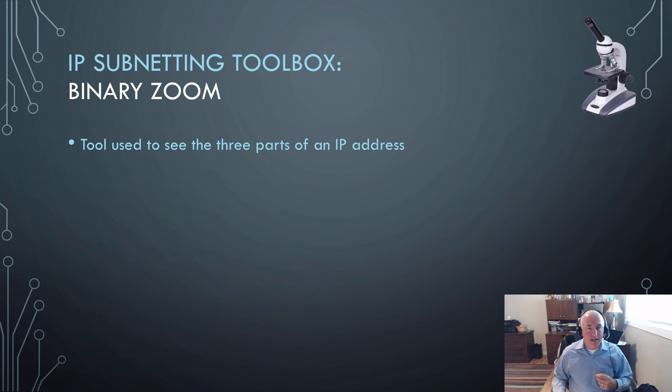This is a tool that lets us look at an IP address in binary. And that allows us to see the three parts of an IP address. I know you thought there were four, because there's four octets. We only see that in decimal. In the binary world, there are three parts, the network, the subnetwork, and the hosts.